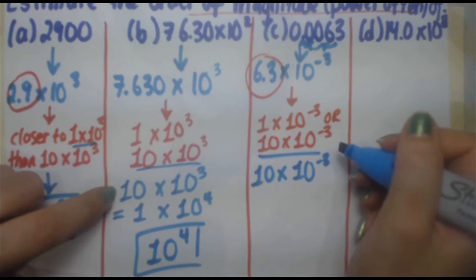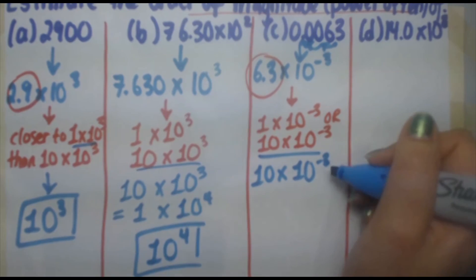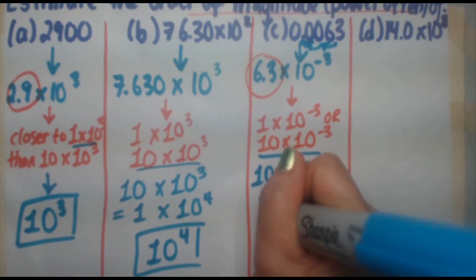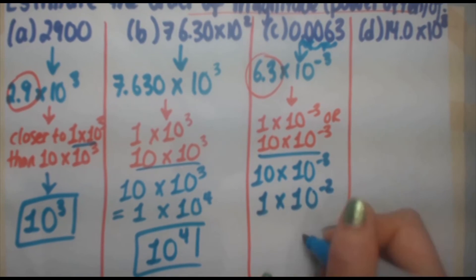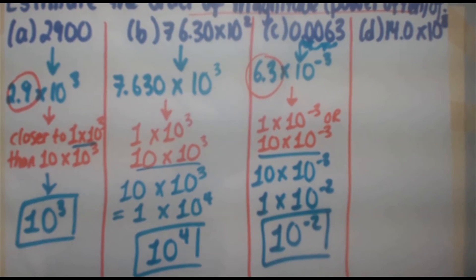This is going in the negative direction, right? We have really small numbers. In this case, when we had 10 times 10 to the minus 3, we actually increased this factor here by 1. So it went from 3 to 4. But in this case, 10 times 10 to the minus 3 makes the number bigger. And by making the number bigger, a negative exponent should get, well, less negative. So in this case, this becomes 1 times 10 to the minus 2. Therefore, 10 to the minus 2 is the order of magnitude for this problem.